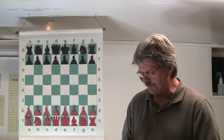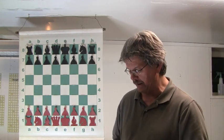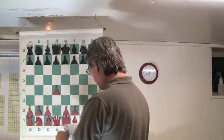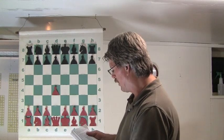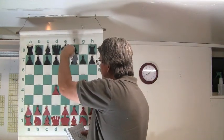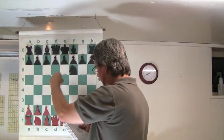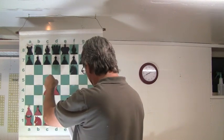Jeremy Silman, Reassess Your Chess, 3rd Edition. Once again, he's discussing the idea of temporary imbalances. And he shows one of his games. He's the black pieces. His opponent, Pupals, is the white pieces. And they do a typical queen pawn opening.